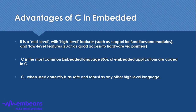C is basically a mid-level language. It has features of high-level languages like support for functions, modules, namespaces, variables, and human-readable syntax. But it also has low-level features like direct access to memory and direct access to hardware using pointers, memory access, and IO interface access.